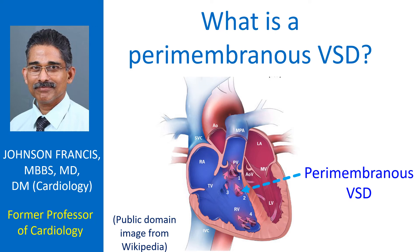Perimembranous VSD is the commonest type of VSD. VSD stands for ventricular septal defect, a hole in the wall between the lower chambers of the heart. When there is a ventricular septal defect, blood shunts from the left ventricle to the right ventricle. The left ventricle is the lower left chamber and the right ventricle is the lower right chamber.